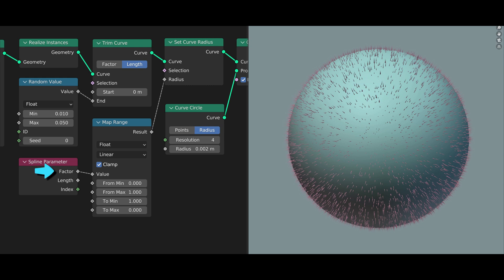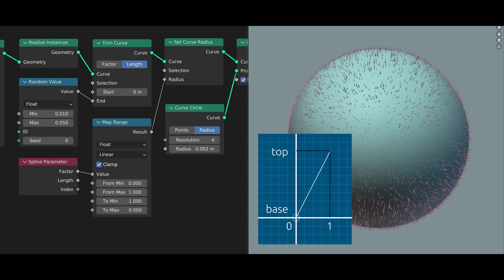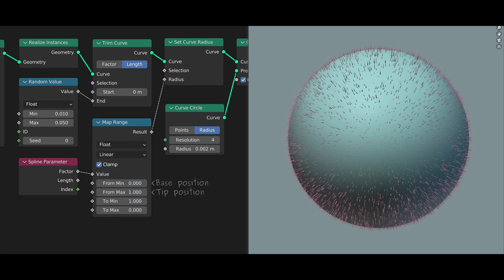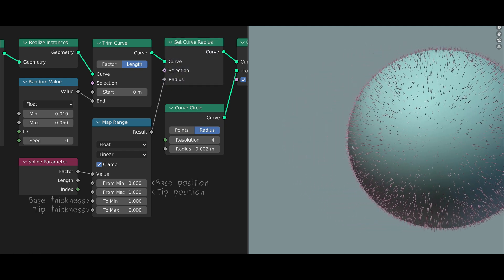The factor output on the spline parameter node gives us a value between 0 and 1, which respectively represents the base and the tip of each strand. This factor is then passed through the map range node, where it is remapped from 1 to 0, and then handed over to the set radius node, which makes the tip pointy.